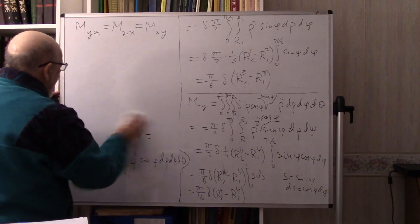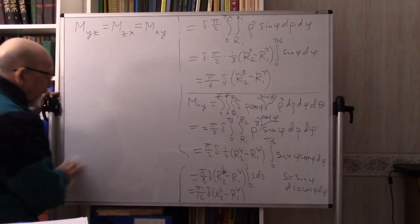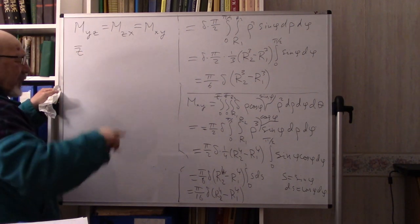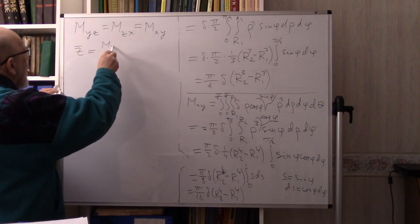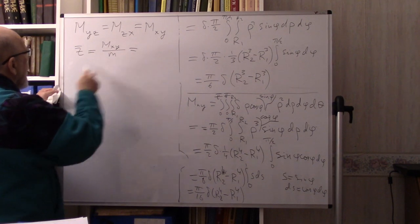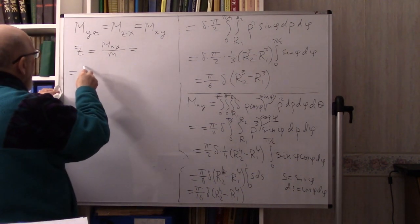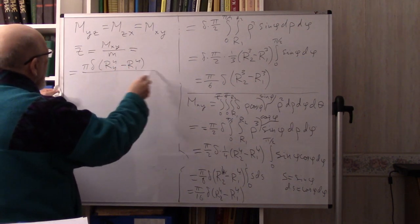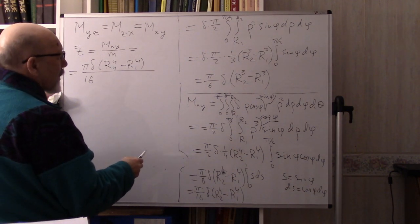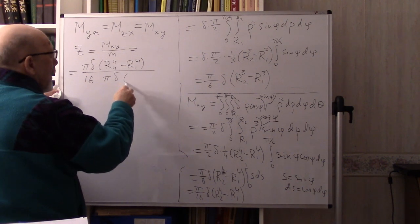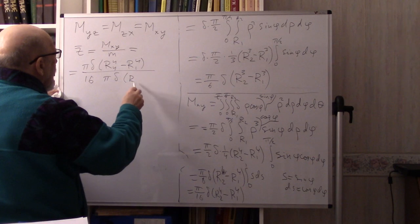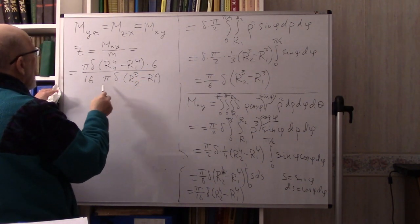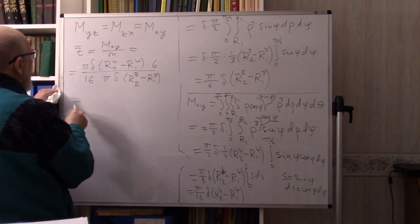To find the position of the center of mass, we divide the moment by the mass. So z̄ = M_xy / M equals [π δ (R₂⁴ − R₁⁴)/16] divided by [π δ (R₂³ − R₁³)/6]. The π and δ cancel, giving z̄ = (3/8) · (R₂⁴ − R₁⁴)/(R₂³ − R₁³).